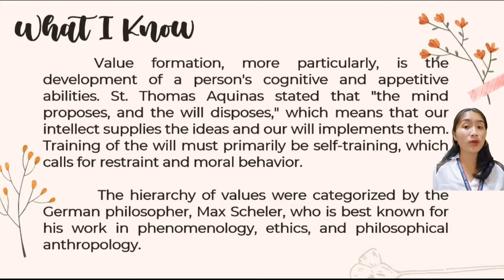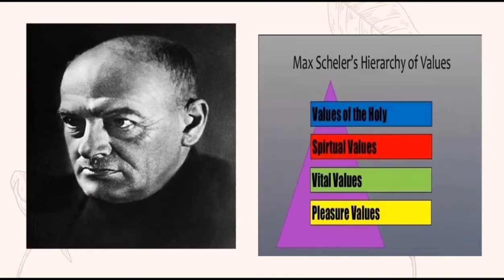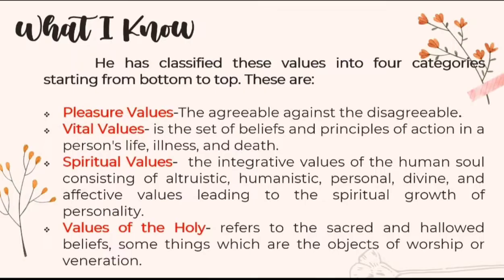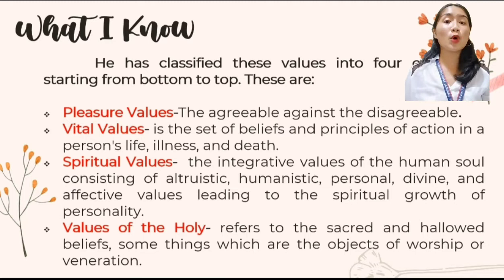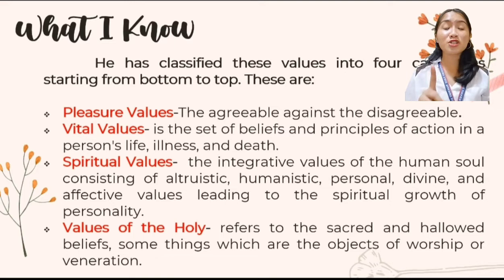The hierarchy of values was categorized by the German philosopher Max Scheler, who is best known for his work in phenomenology, ethics, and philosophical anthropology. This is Max Scheler and his hierarchy of values, categorized into pleasure values, vital values, spiritual values, and values of the holy. Max Scheler classified these values into four categories, from the bottom to the top: pleasure values, vital values, spiritual values, and values of the holy.